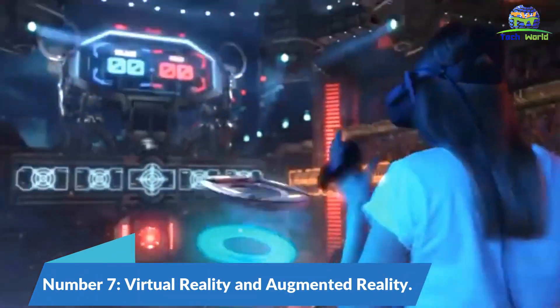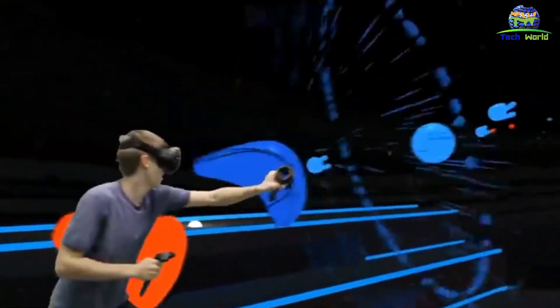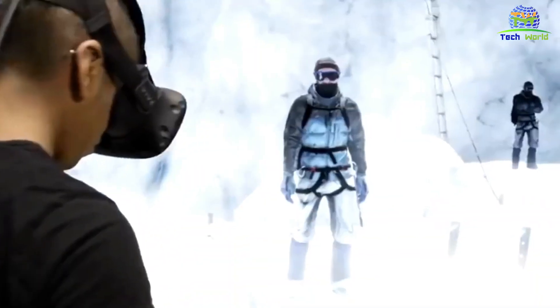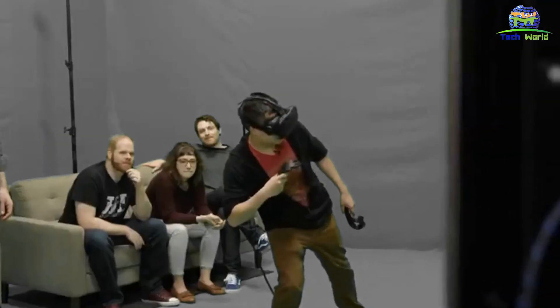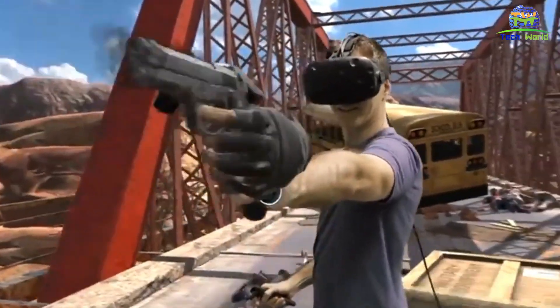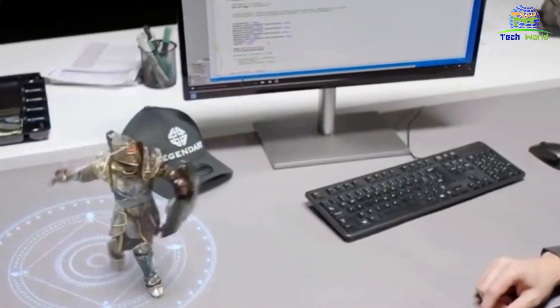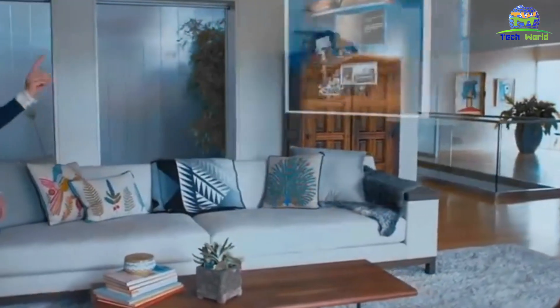Number 7. Virtual Reality and Augmented Reality. Virtual Reality and Augmented Reality are technologies that allow users to experience a computer-generated environment or augment the real world with computer-generated information. These technologies have the potential to revolutionize the way we learn, work, and interact with one another.